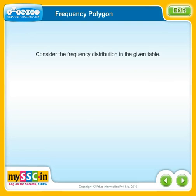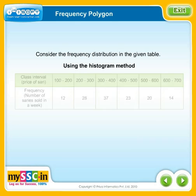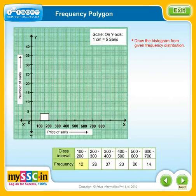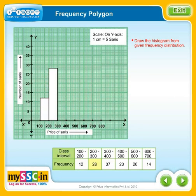Consider the frequency distribution in the given table. Let's see the steps to draw a frequency polygon using the histogram method. Draw the histogram from the given frequency distribution.